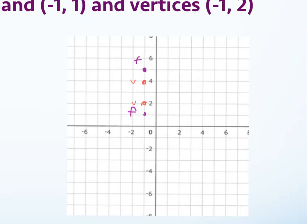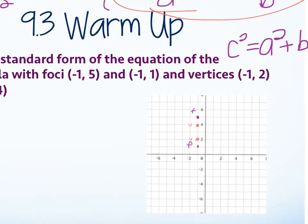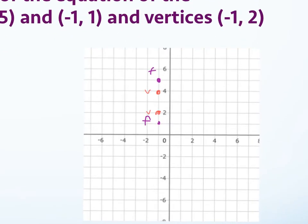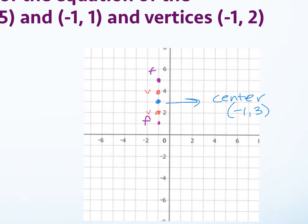Just by looking at this you can tell it's vertical, which means we follow the y squared minus x squared equation. The center is halfway between either set of those points, which in this case is negative 1, 3. A is 1, because you count the distances from the center to the vertices.